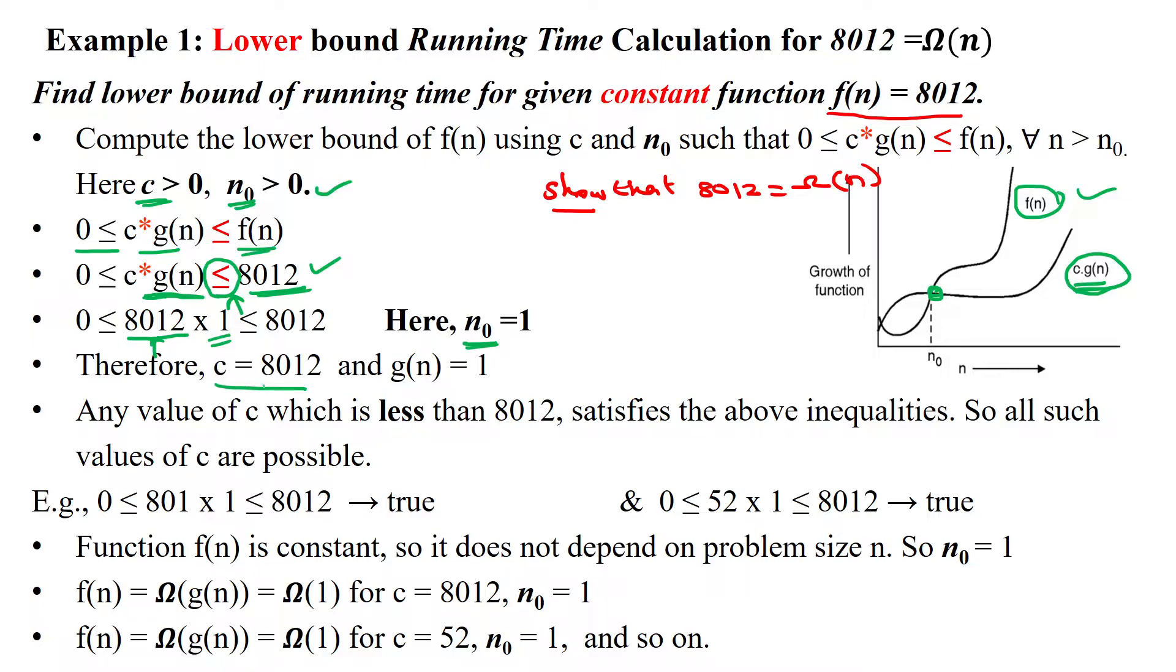So therefore, constant is here 8012 and g(n) is 1. So like this, there are infinite number of possibilities with constant number less than 8012, which will satisfy the inequality given above,